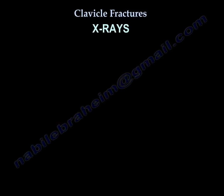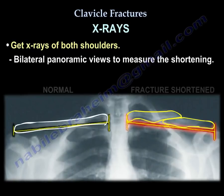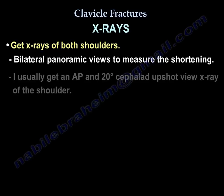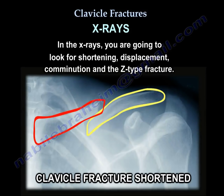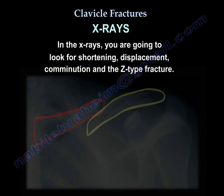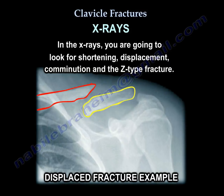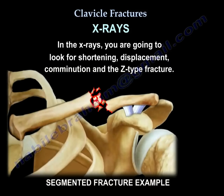For x-rays, obtain bilateral panoramic views of both shoulders to measure and compare clavicle length and assess the amount of shortening. I usually also get an AP and 20-degree cephalad upshot view of the shoulder, especially in the operating room. On the x-rays, look for shortening, displacement, comminution, and the Z-type fracture.